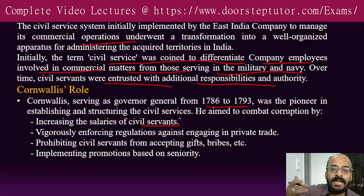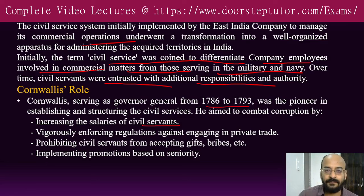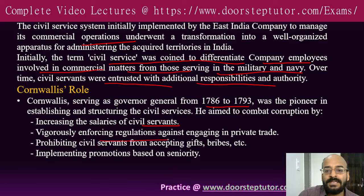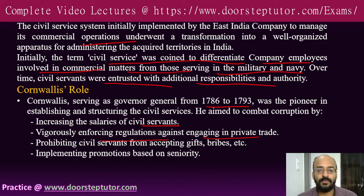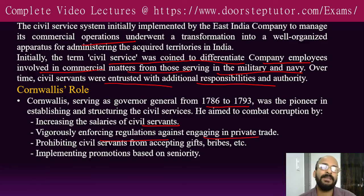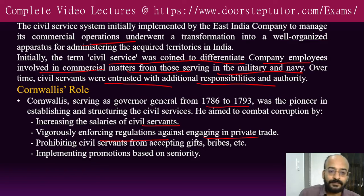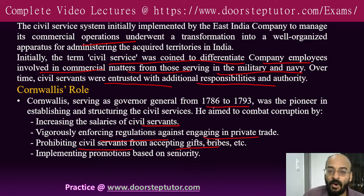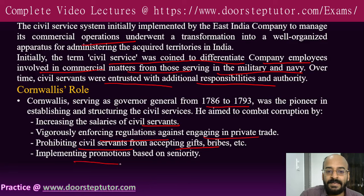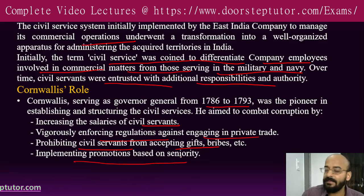Cornwallis aimed to combat corruption by increasing the salary of civil servants so they would not indulge in corrupt practices. He vigorously enforced regulations against engaging in private trade — civil servants employed by the East India Company should look after the company's trade, not their own. He prohibited civil servants from accepting gifts or bribes, and implemented promotions based on seniority to motivate officials.